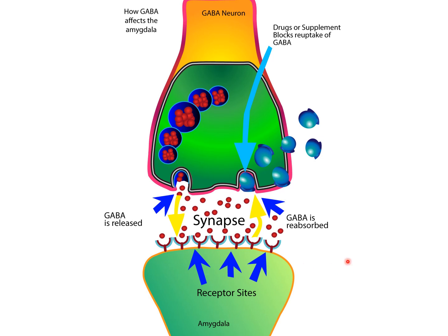What happens is that we have GABA neurons which actually connect to the amygdala. Here is a GABA neuron, and they connect to the amygdala via connections called the synapse. The synapse between neurons is how neurons connect to one another via neurotransmitters — molecules which travel from one neuron to another across the empty space between them to communicate.